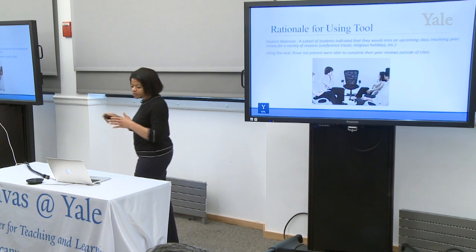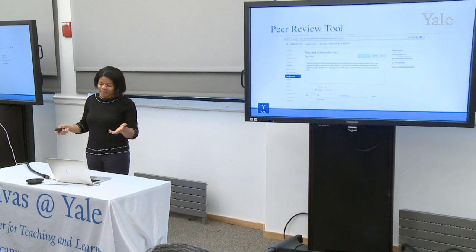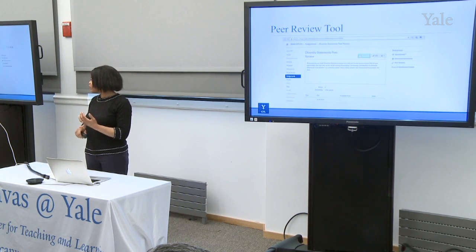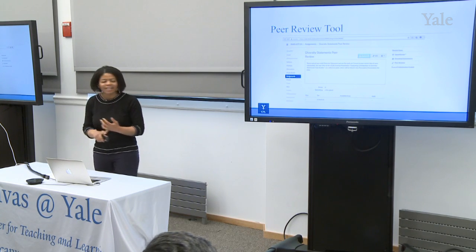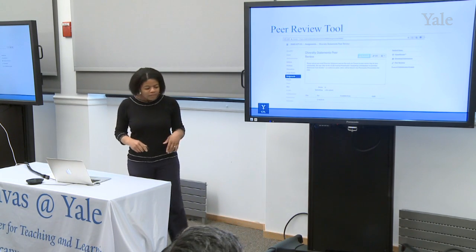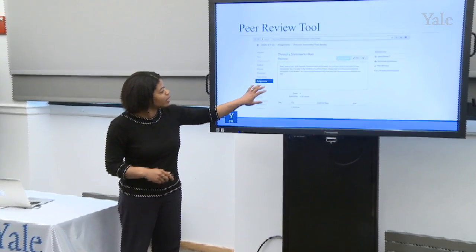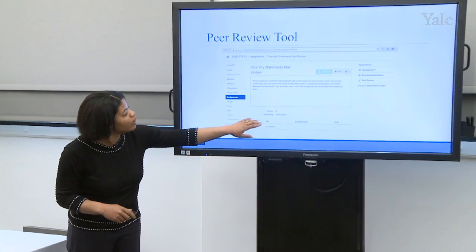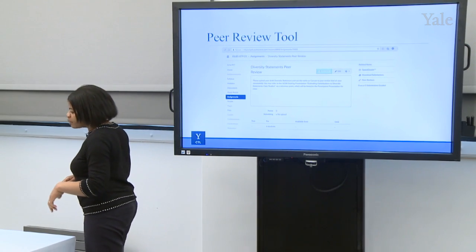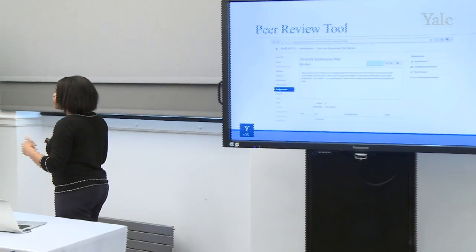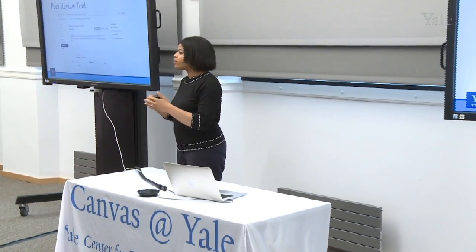So there was a subset of students who were to complete this assignment online. It is a non-credit course, but students sign up and apply to take it, so they're usually pretty serious about it. In our Canvas course site I created an assignment for peer review and told them to upload their draft diversity statement. I paired specific students with other students, which you can do in Canvas.